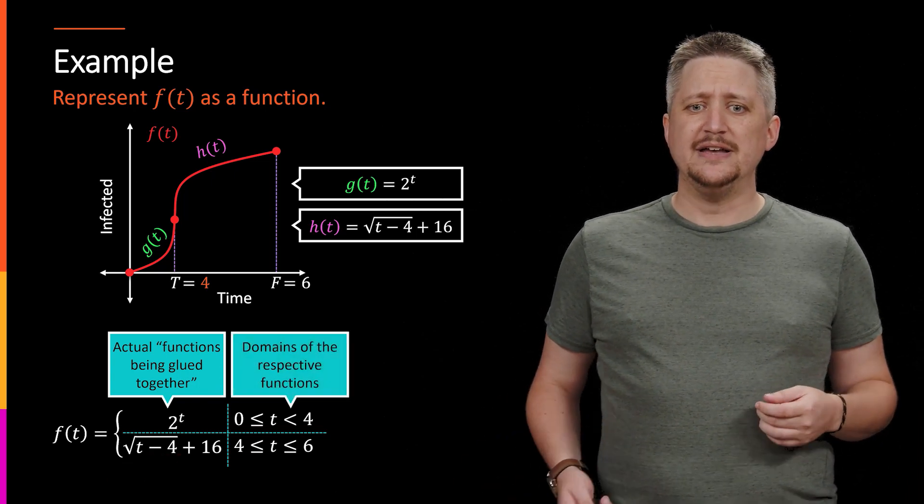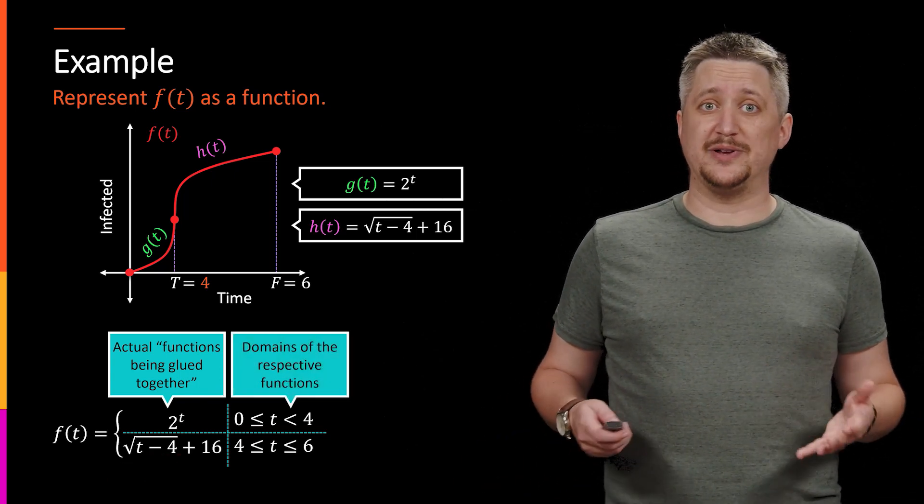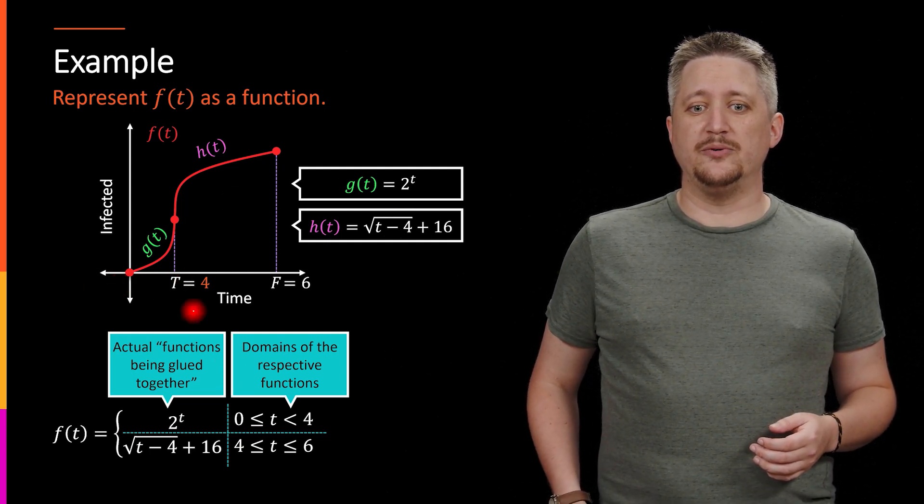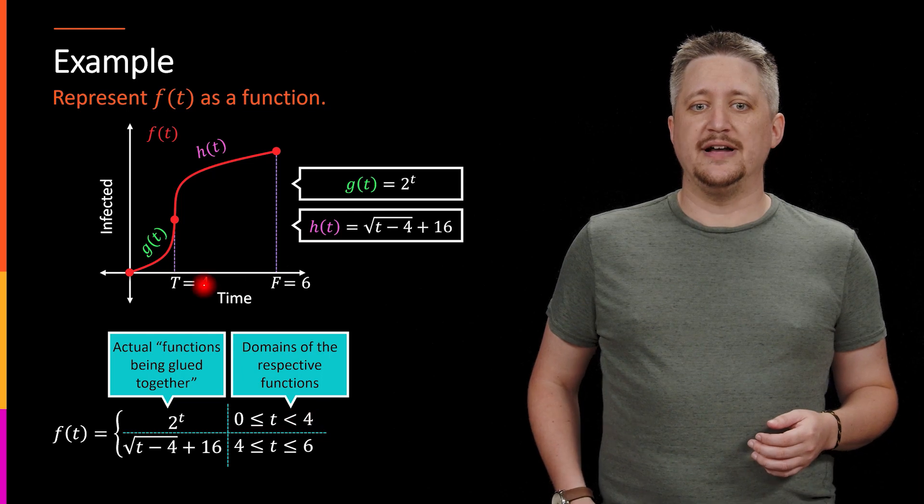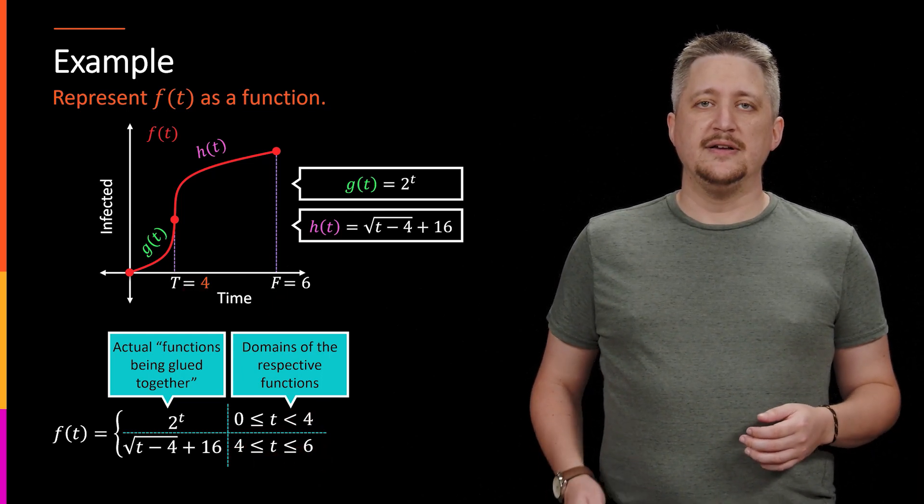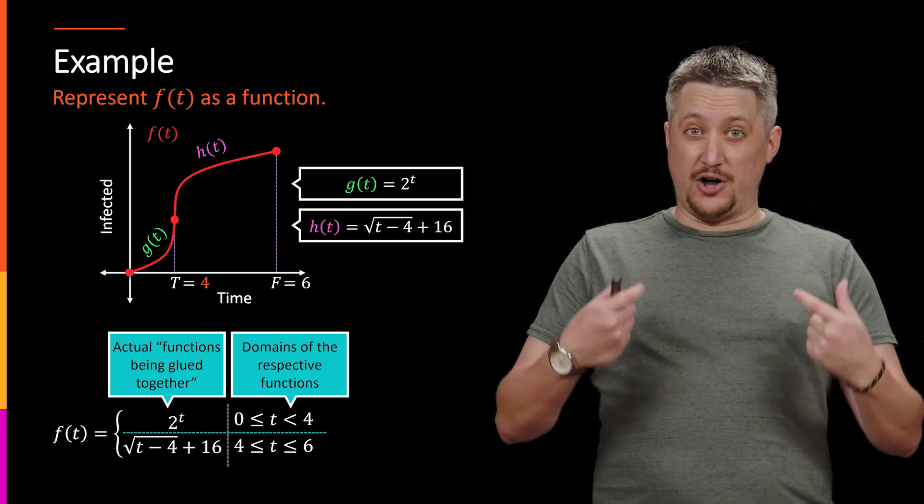The second column is the domains for those respective functions, meaning that we're breaking this up into the zero to four domain, and then the four to six domain. So that's what the columns represent.